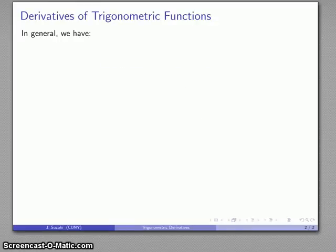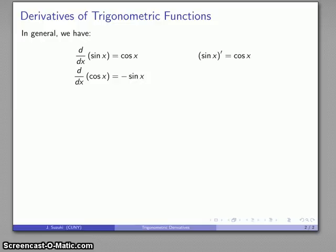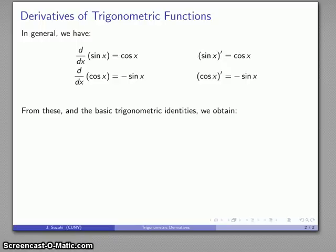So how about those trigonometric functions? In general we have the basic derivatives of the trigonometric functions. The derivative of sine is cosine — in differential notation, the derivative of sine is cosine. Likewise, the derivative of cosine is minus sine of x. These are the only two you actually need to remember, and really only one if you remember all of your trigonometric identities. However, it's convenient to have a couple of others, so from these and the basic trigonometric identities we also find the derivatives of the other important trigonometric functions.